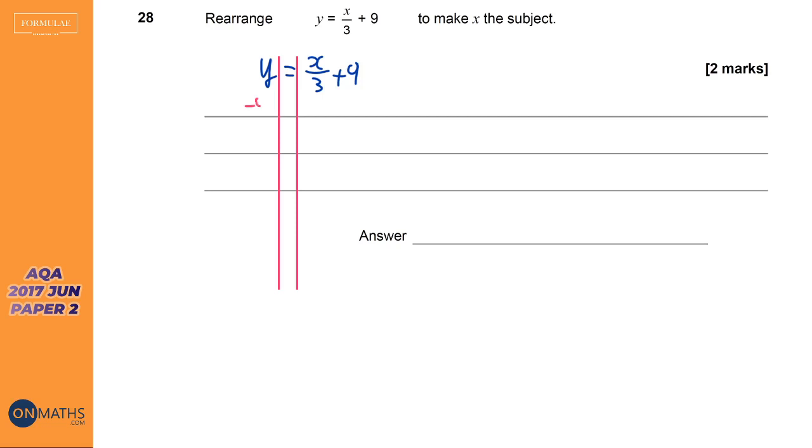So we're going to get rid of that plus 9 by taking away 9 both sides. And so on the left hand side we've just got y minus 9. On the right hand side we've still got that fraction. Okay, what does that part there mean? Well over 3 means divided by 3.